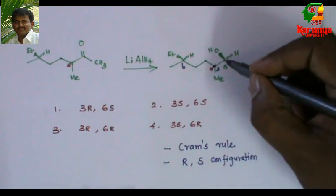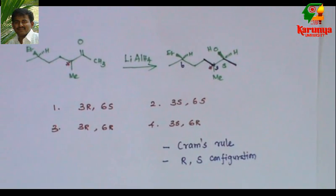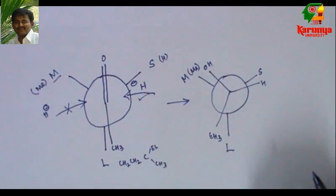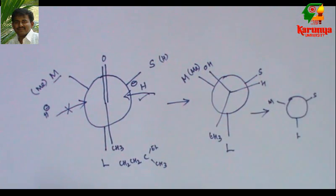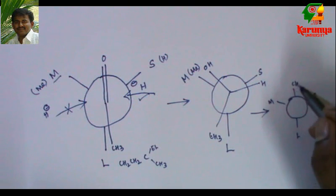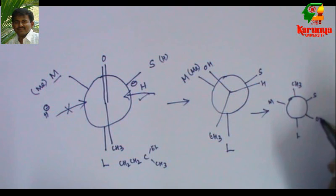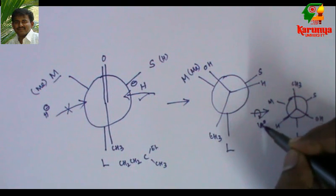But in the given structure, the methyl and the large group, they are trans to each other. So we have to arrange these two groups in trans fashion, then only you can compare. I fix the rear one as such, then I rotate this by 180 degrees. What I get is this compound. I have rotated that by 180 degrees.